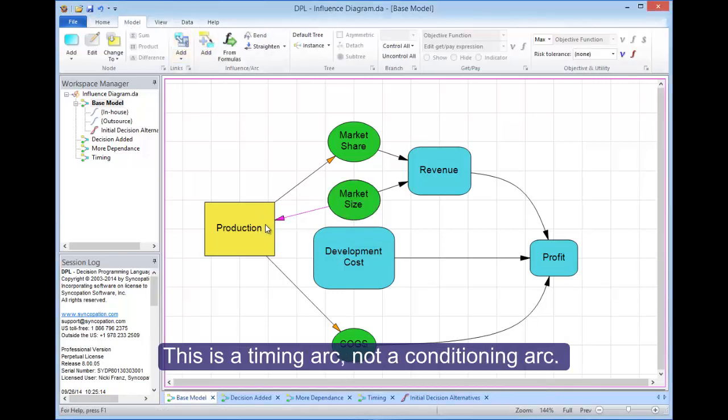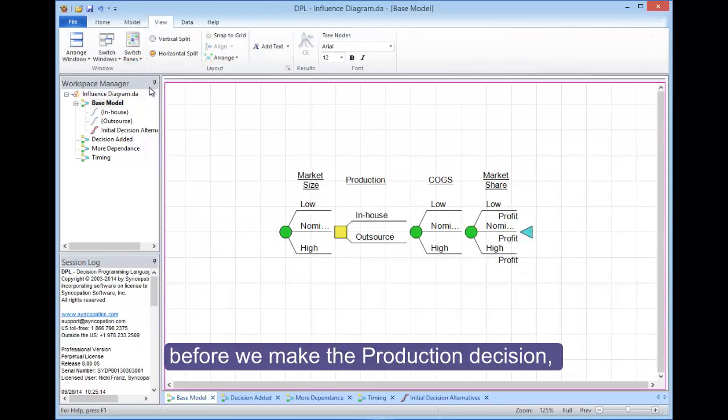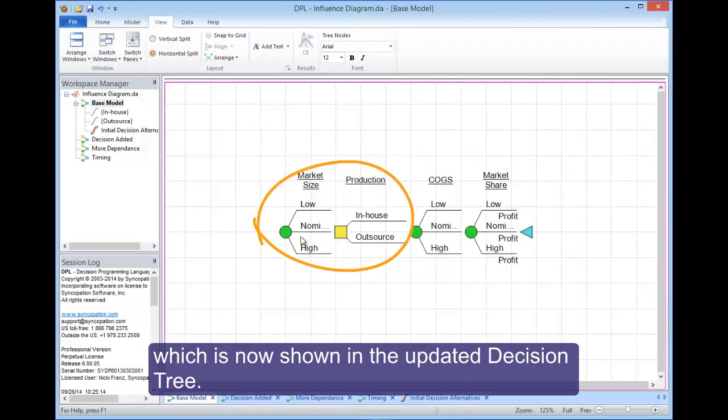We simply draw an arc from market size to the production decision. This is a timing arc, not a conditioning arc. It tells DPL we'll know the market size outcome before we make the production decision, which is now shown in the updated decision tree.